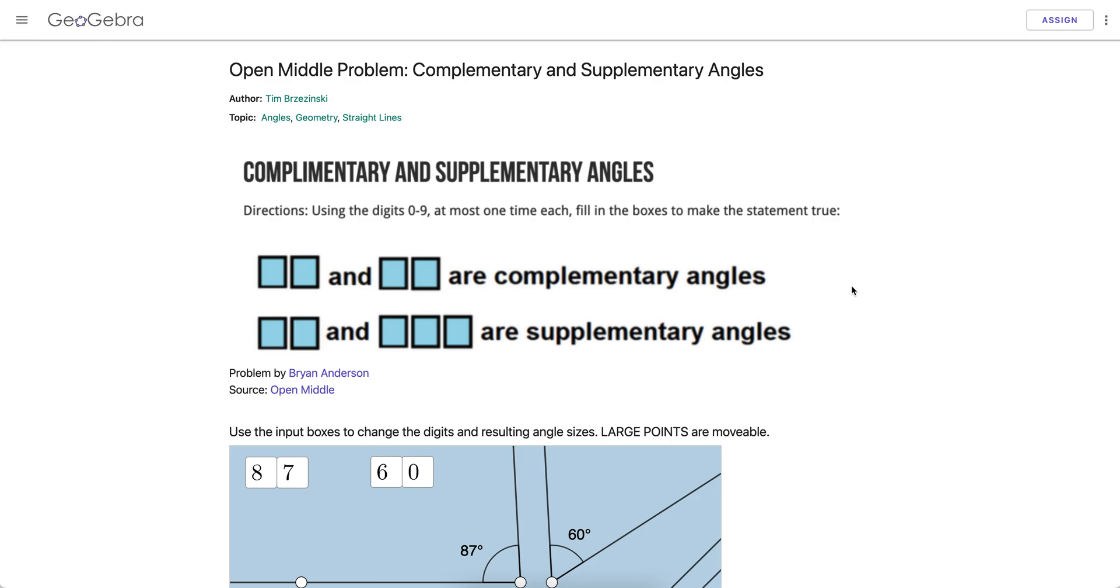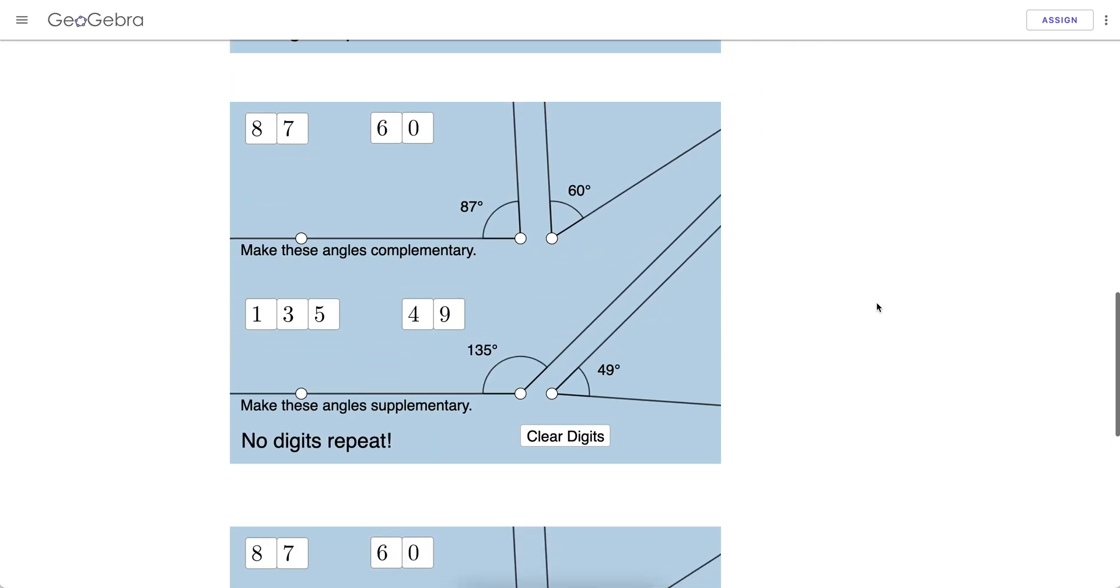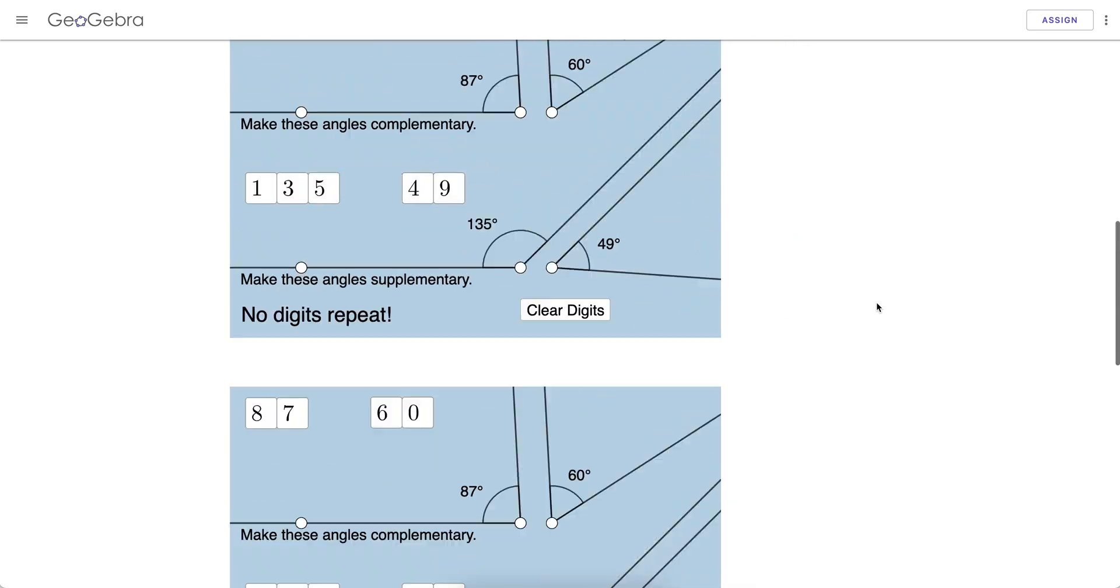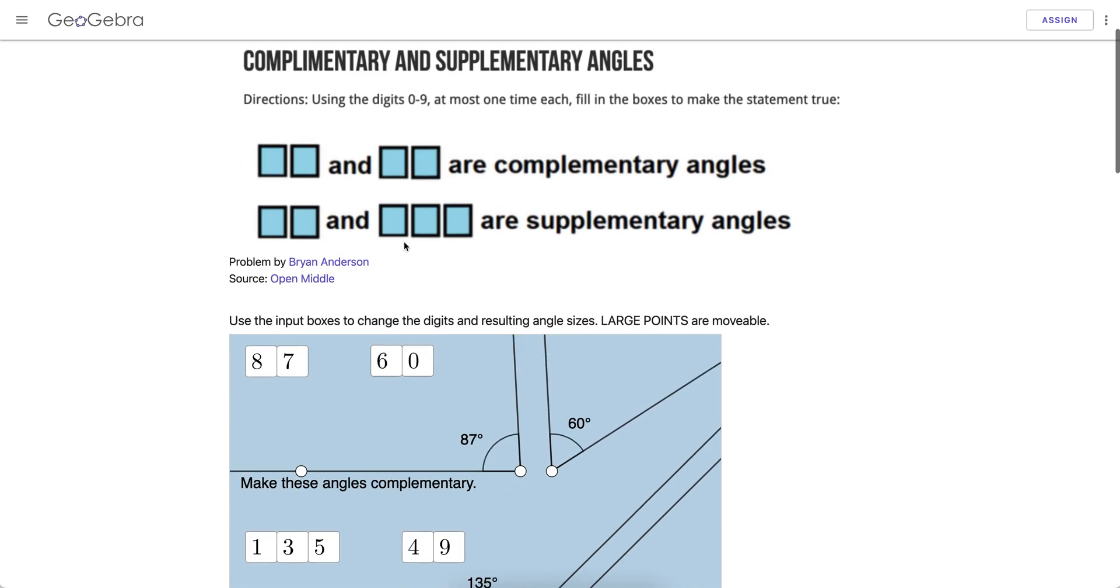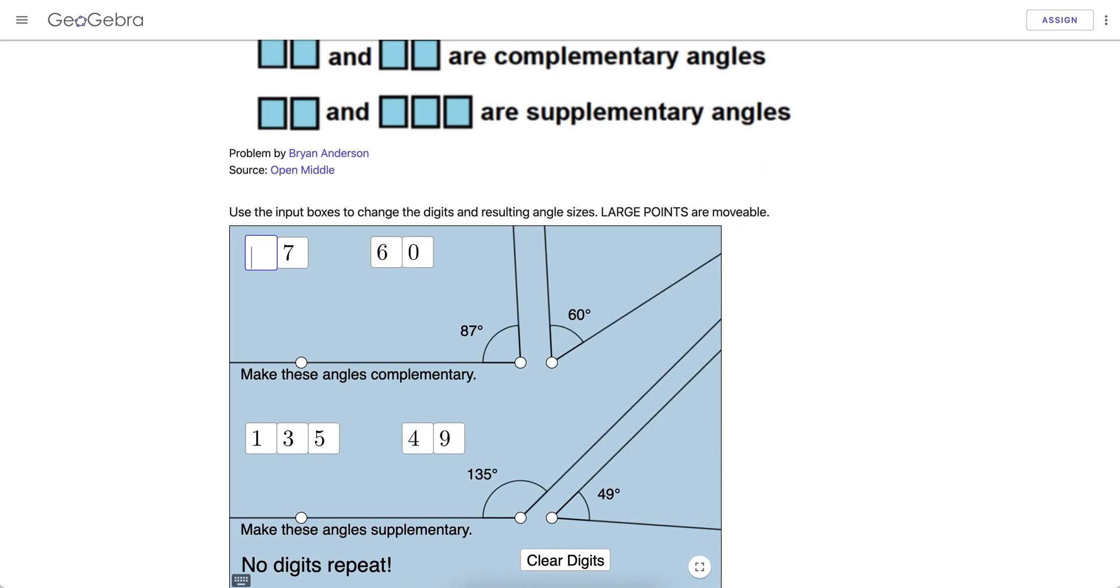There's a difference between a GeoGebra activity versus a GeoGebra book. Right here, we have a single GeoGebra activity. It's got four GeoGebra apps in it, and students here, for example, have to change digits to make a pair of complementary and supplementary angles.